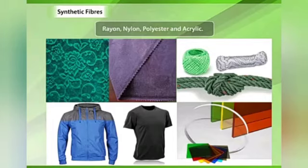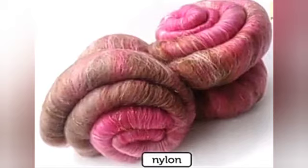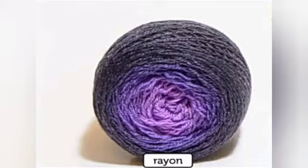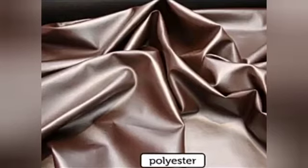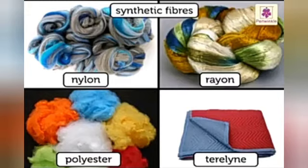Fibers like rayon, nylon, polyester, and acrylic are synthetic fibers or human made fibers. Synthetic fibers are made in industries by using various types of chemicals. Some examples of synthetic fibers are nylon, rayon, polyester, terrylin, etc. All these fibers are known as synthetic fibers or human made fibers.